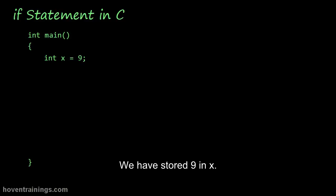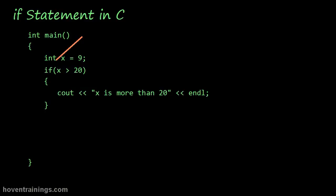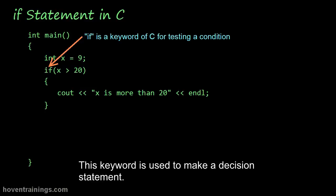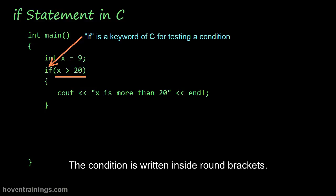We have stored 9 in X. This keyword is used to make a decision statement. It is used to test for a condition. The condition is written inside round brackets. It is also called the condition expression.